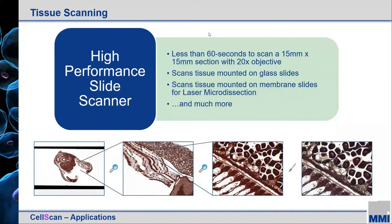One of the keys to whole slide imaging is speed. Folks are interested in stepping up, watching the scanning process happen, seeing great results with confidence, and then stepping away to analyze images at home, at their desk, or sharing with colleagues and students. This system has been set up as a high-performance slide scanner implemented on an off-the-shelf microscope. We can scan a typical 15-millimeter square section with a 20x objective in under 60 seconds — considered quite speedy. We can scan tissue on glass slides, tissue on membrane slides for laser microdissection, and essentially any specimen type you'd present to a typical inverted microscope.